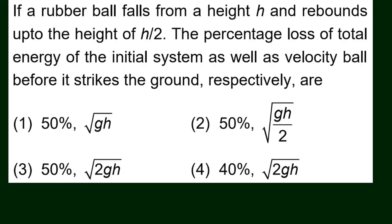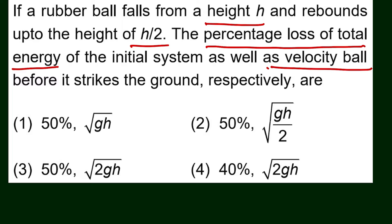The problem is: if a rubber ball falls from a height H, and it rebounds up to a height of H/2, we have to find out the percentage loss of the total energy of the initial system, as well as the velocity of the ball before it strikes the ground. So we have to find two things here — how much energy is lost after the strike, and the velocity of the ball before it hits the ground.